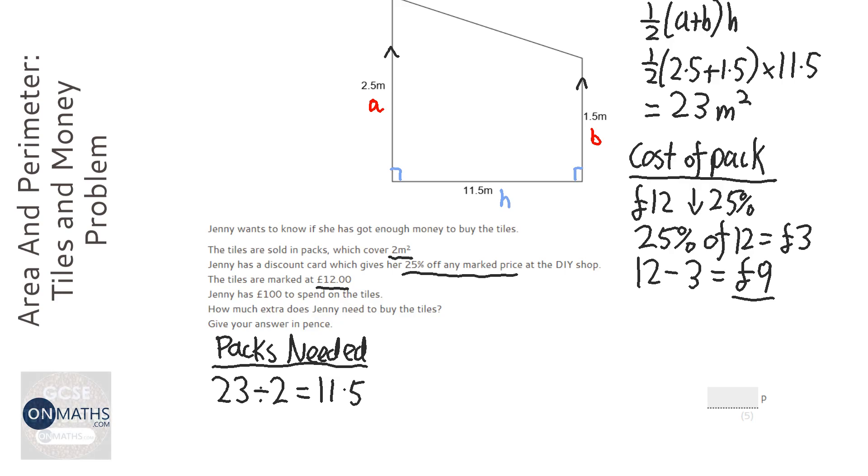Well, unfortunately, shops don't like you taking half a pack. Trust me, I've tried. They really don't like it. So you must always round this up. Otherwise, you won't have enough. If you round it down, say if it came out as 11.4, if you rounded that down, you won't have enough. So there'll be a patch of untiled floor in your kitchen. That's not good.